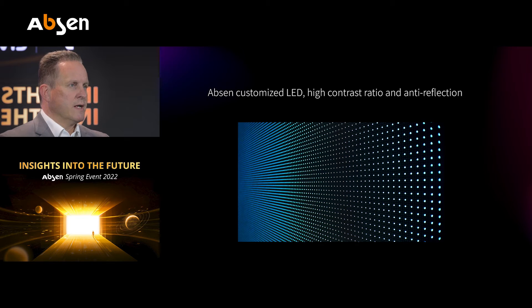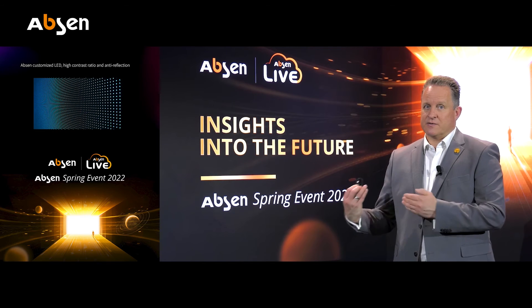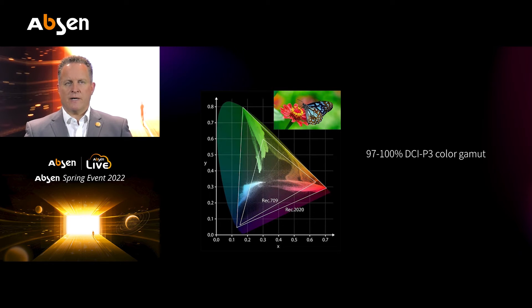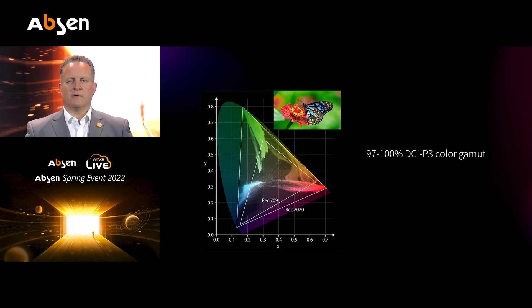The technical features include high contrast ratio and anti-reflection treatment of the surface, because it's important for virtual production that the LED screen doesn't reflect into the camera. Then there is the color gamut — we cover 97% to 100% of DCI-P3 color gamut, and a quite large range of BT-2020 where needed. BT-2020 is the biggest color range and is definitely not yet available at 100% capture with existing technology.